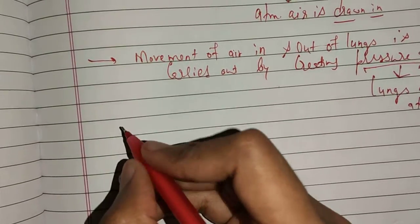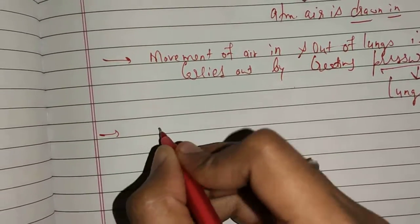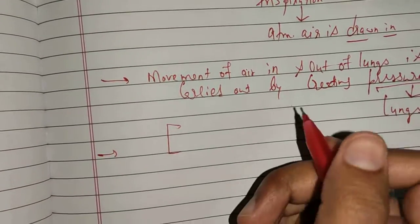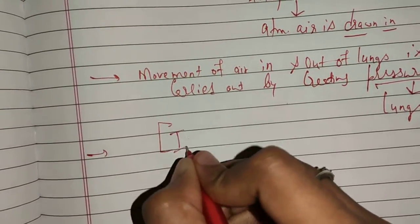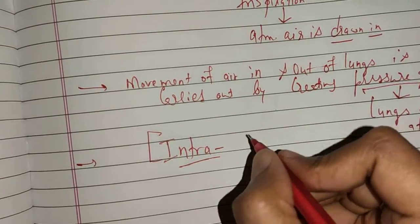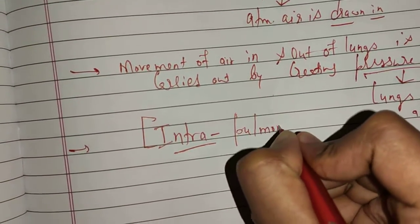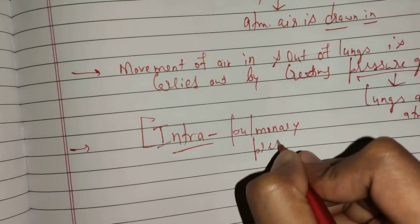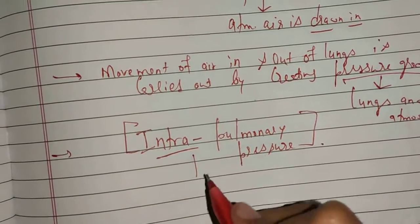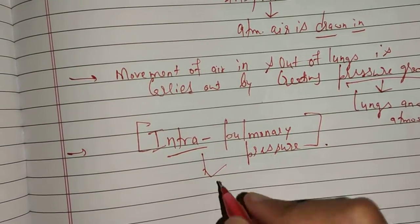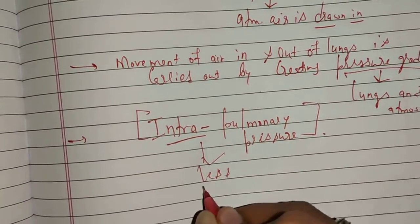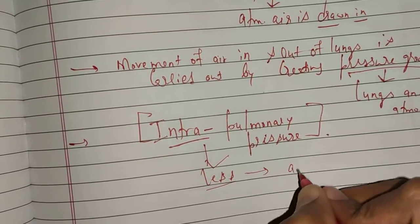The inspiration process occurs when the pressure within the lungs is less. The term used for the pressure within the lungs is intra-pulmonary pressure. Inspiration happens when intra-pulmonary pressure is less as compared to atmospheric pressure.